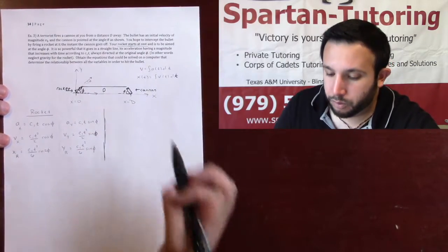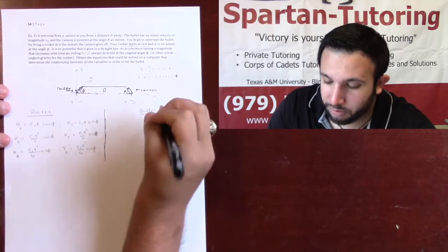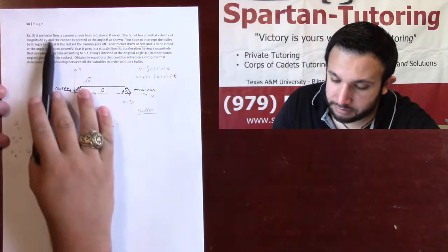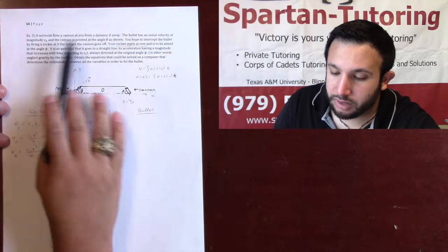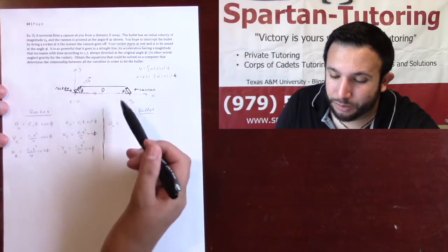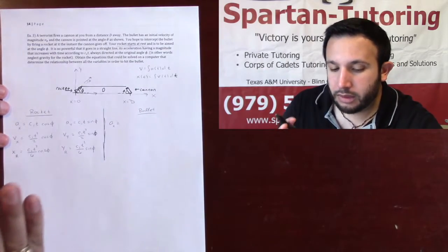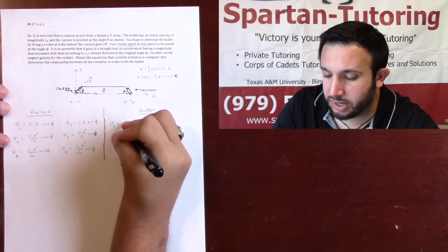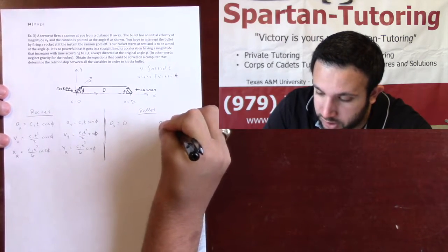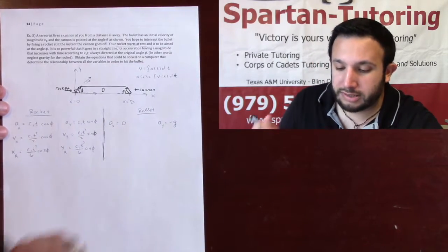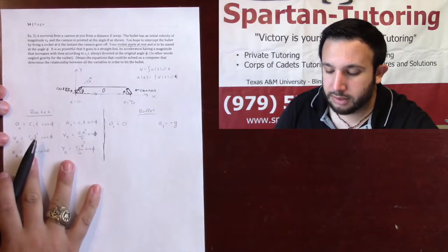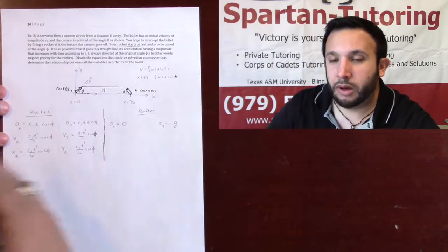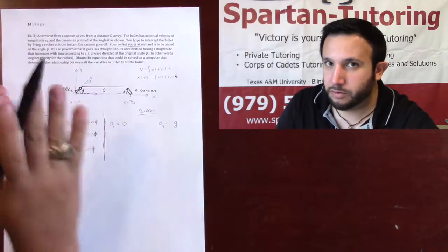Now we need to find x and y for the bullet. The bullet is in regular free fall — unless otherwise specified, when something is in free fall, acceleration in x equals zero and acceleration in y equals negative g. The rocket was a special case where we were told to ignore gravity and given a specific acceleration. For the bullet, a_x = 0 and a_y = -g, as long as positive y points up.